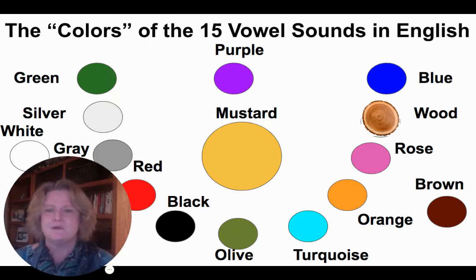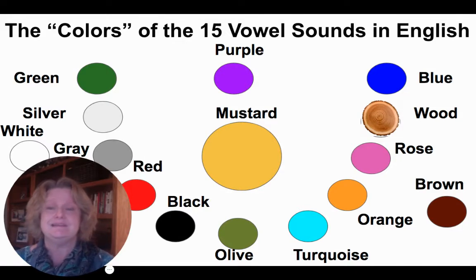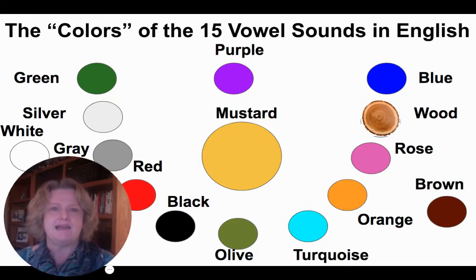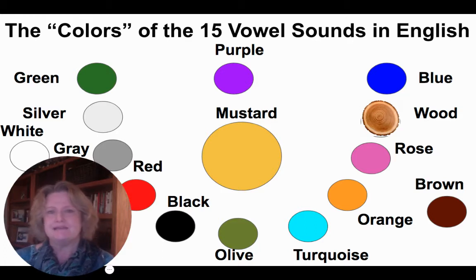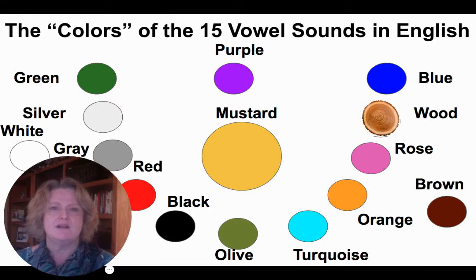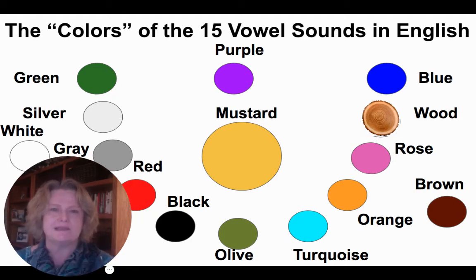Repeat after me. Green — E. Silver — I. White — I. Gray — A. Red — E. Black — Ah. Olive — Ah. And you really need to use your jaw going down to make that sound.